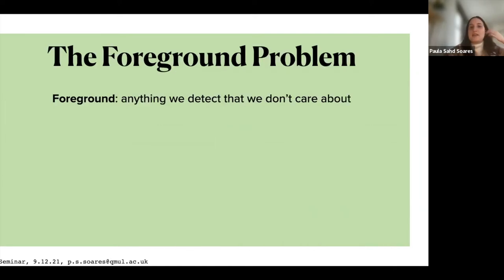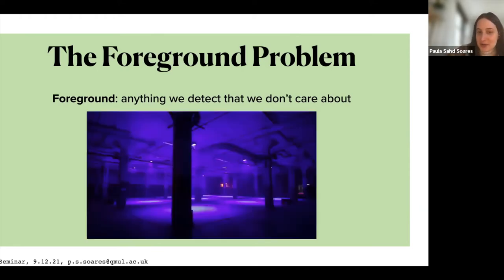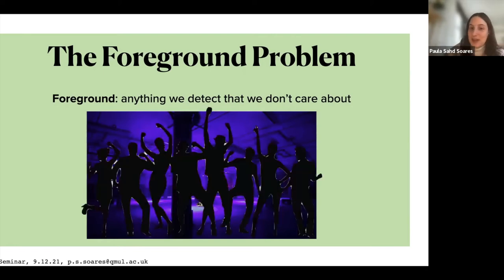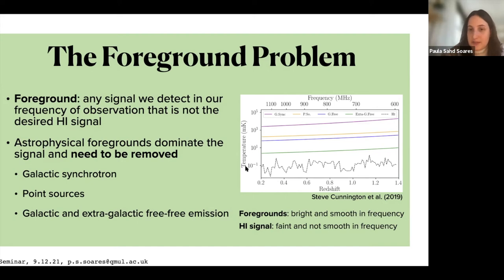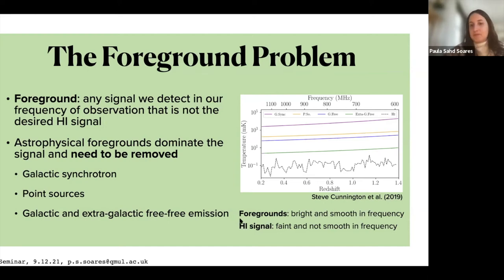A foreground is anything we detect that we don't actually care about. Imagine you're at a party and there's a duck on the dance floor you want to observe, but there's a bunch of people dancing in front of it — that's essentially what we're dealing with. In our case, a foreground is any signal detected at our frequency of observation that is not the desired HI signal. These come from astrophysical foregrounds such as galactic synchrotron, point sources, and galactic and extragalactic free-free emission — and these are several orders of magnitude larger than our HI signal. However, foregrounds are smooth in frequency, unlike HI, which can help us remove them.